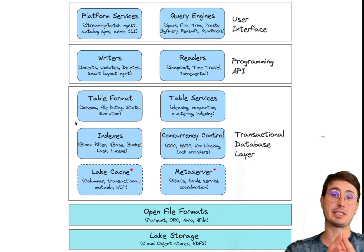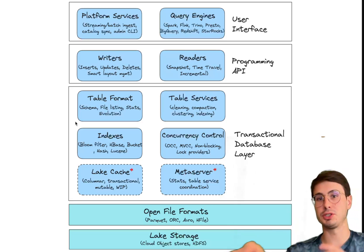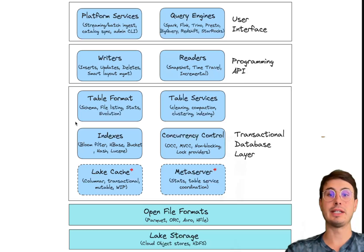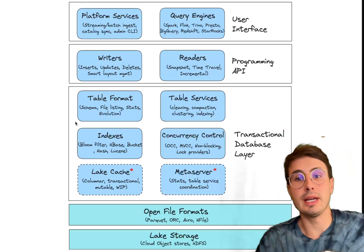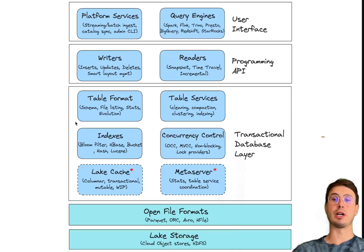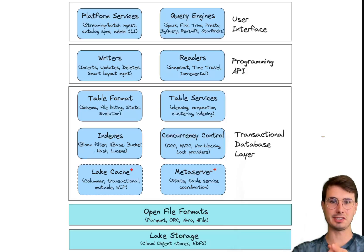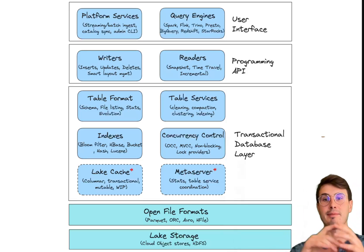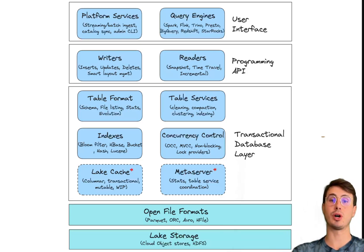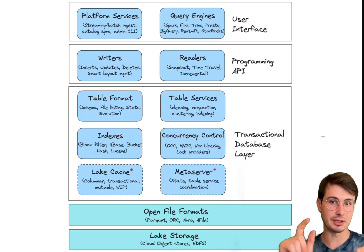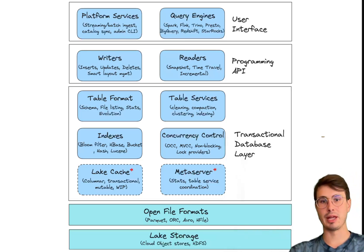Hudi uses indexing at its core to manage records efficiently. This indexing mechanism helps locate the files where records are stored and ensures quick access and updates. Indexing strategies like bloom filters and global indices are built into Hudi and can be employed based on the use case, giving you additional granularity and flexibility. Hudi also maintains ACID compliance — atomicity, consistency, isolation, and durability — using a commit protocol that records every insert, update, and delete as a commit, tracked in a timeline to ensure data integrity even during concurrent operations.